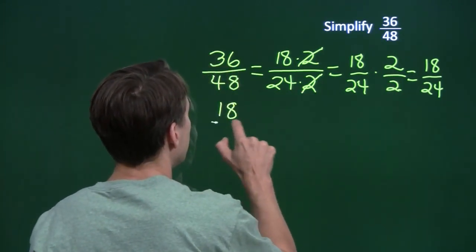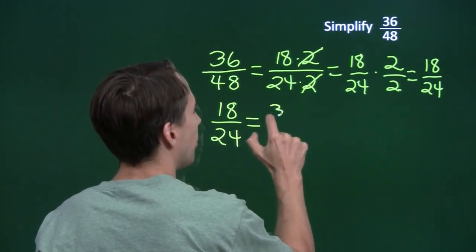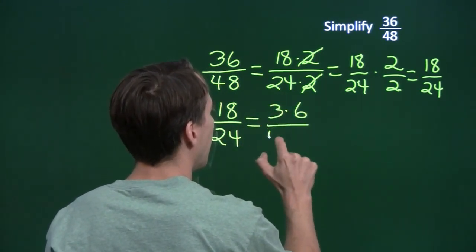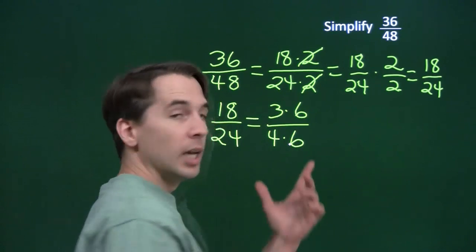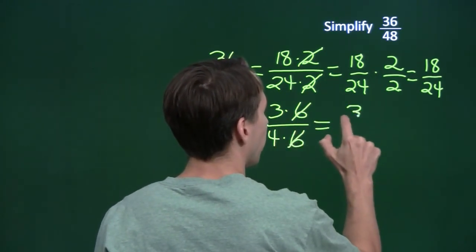So we can write this as 18 over 24 is, the top is 3 times 6, the bottom is 4 times 6. And again, we can cancel out this common factor, and we're left with 3 over 4.